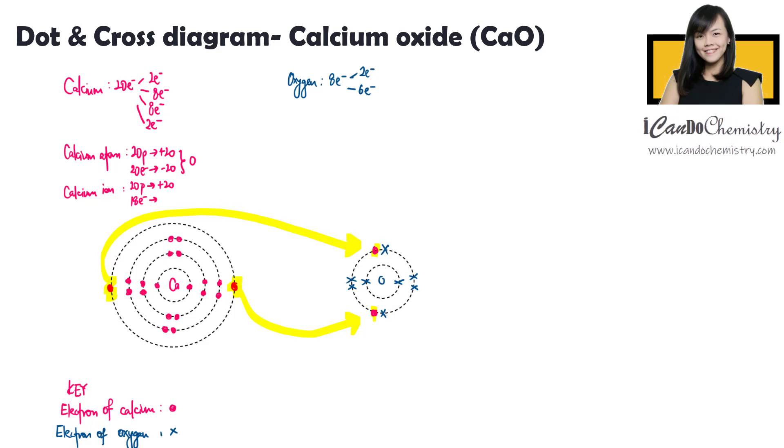Hence, the negative charge is negative 18. Overall charge in this ion is positive 2. We will need to represent this charge in the dot and cross diagram. Now put the bracket and the charge.